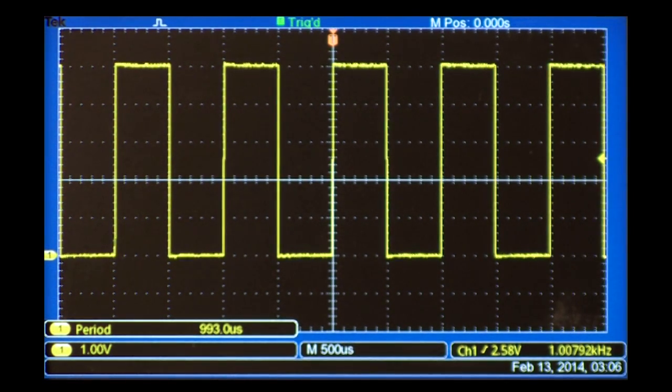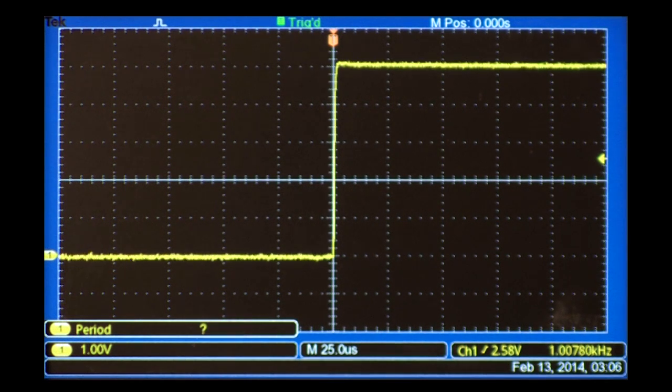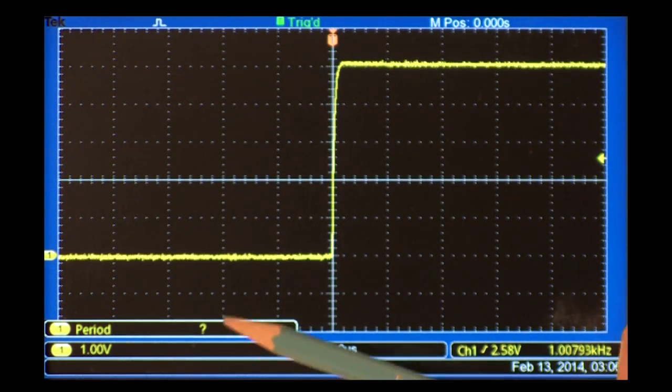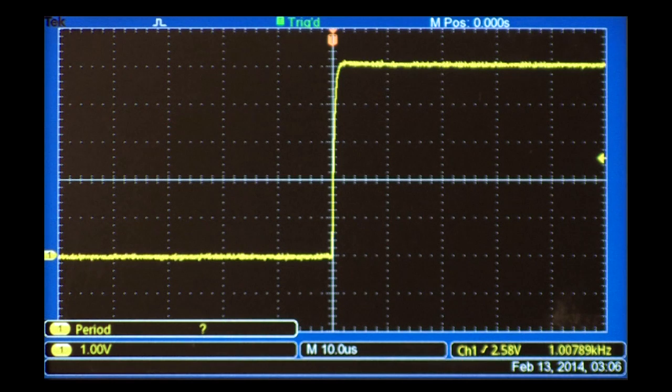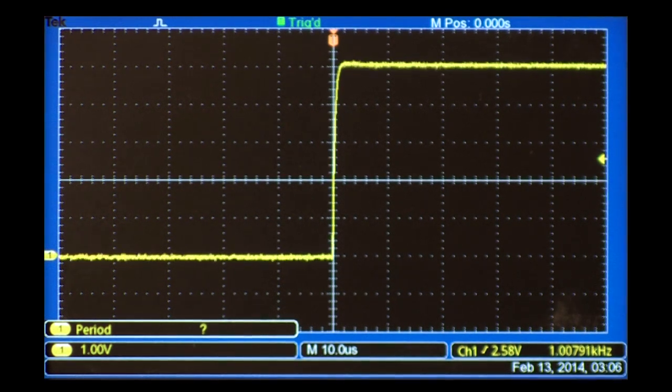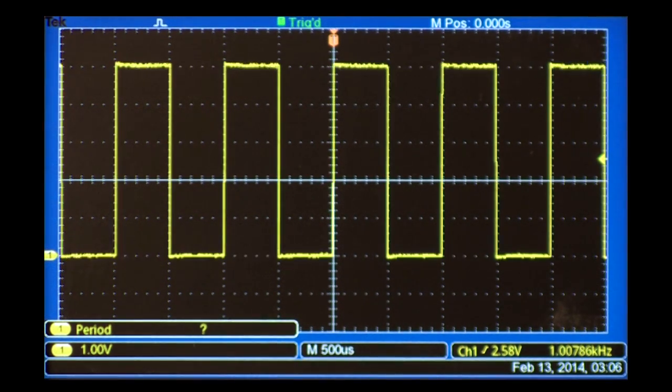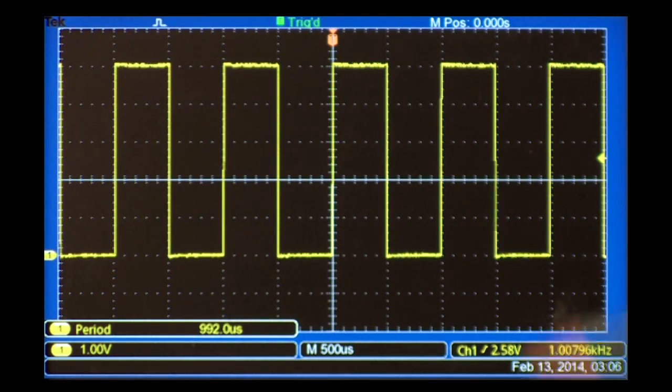When the scope does not have enough information, it shows a question mark. As you can see, when enough information is provided, the automatic measurement provides the same information we saw when we used the cursors. But in this case, we didn't have to position the cursors.